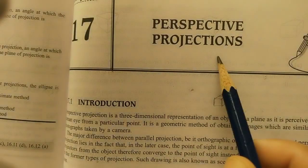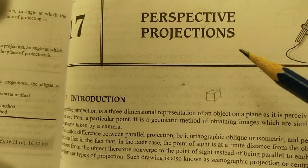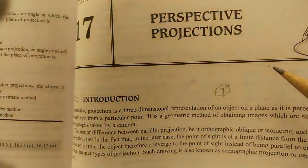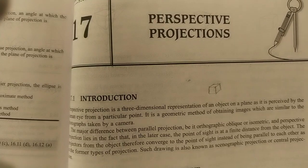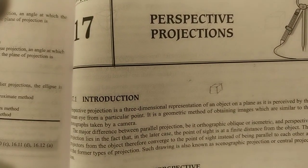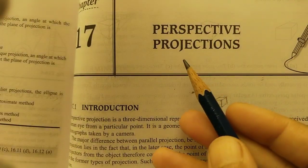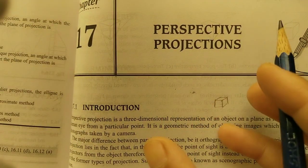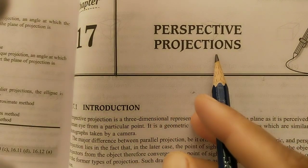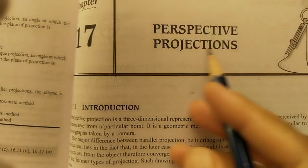Perspective projection is a geometrical method of obtaining images which are similar to photographs taken by a camera. By using a camera we are taking snaps, and those pictures are called perspective projections. Those are three-dimensional diagrams — from a camera we take the pictures, and those pictures are called perspective projections. Now let us look at the important points for drawing perspective projections.